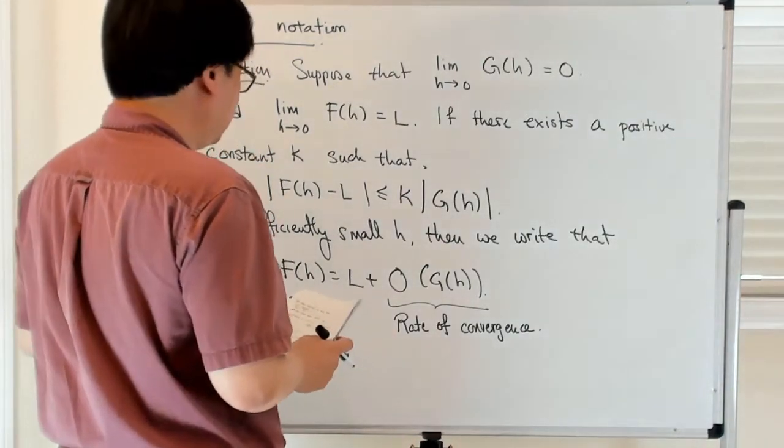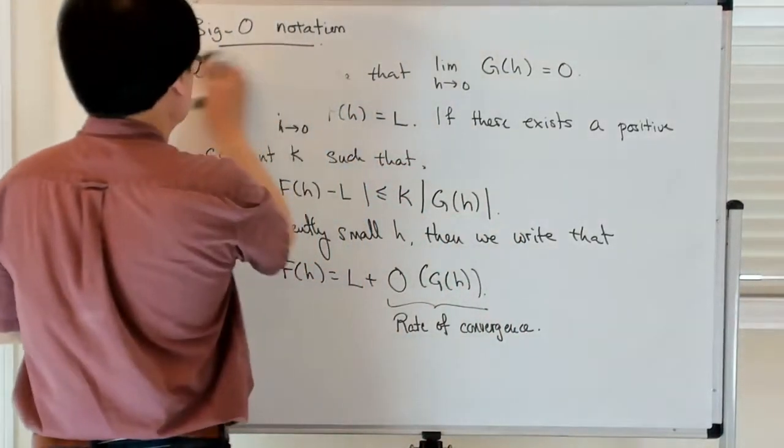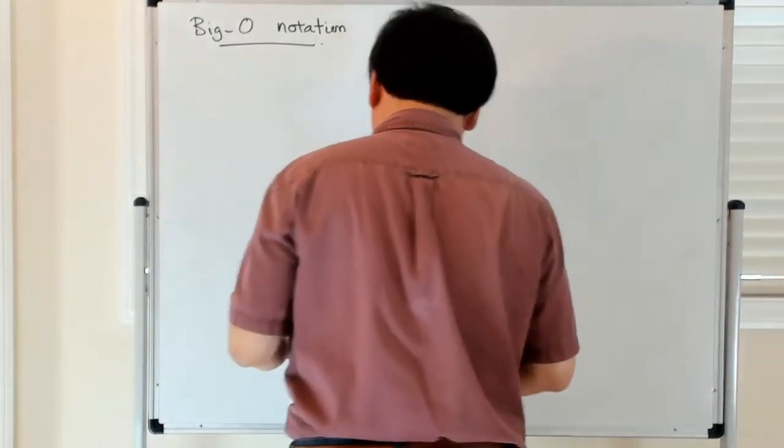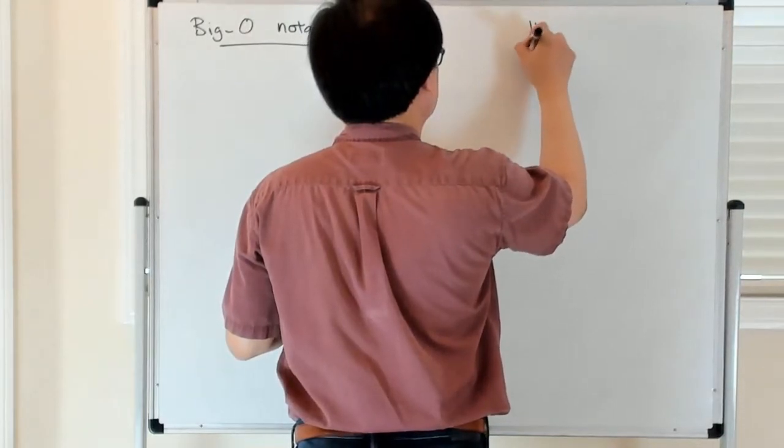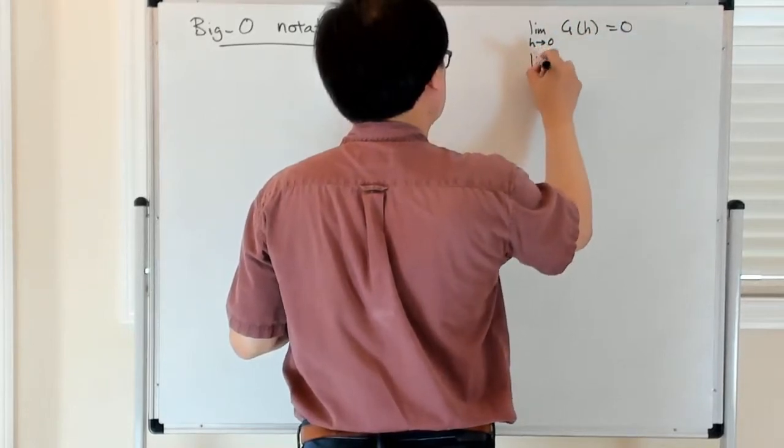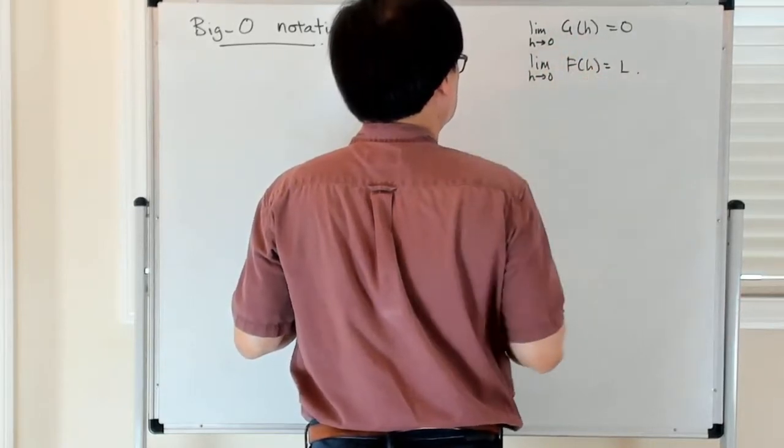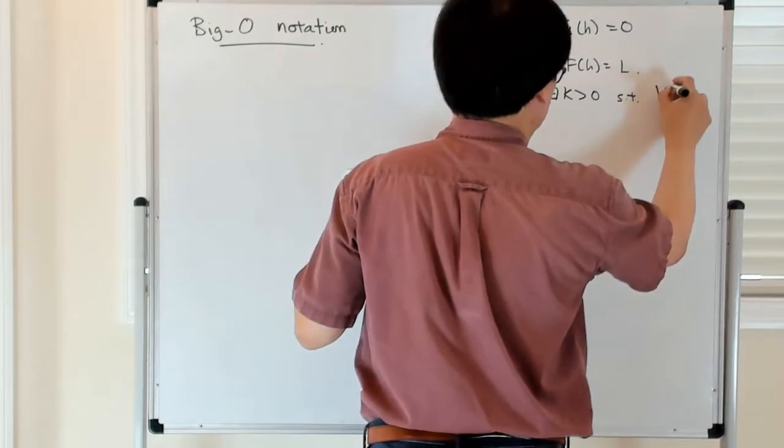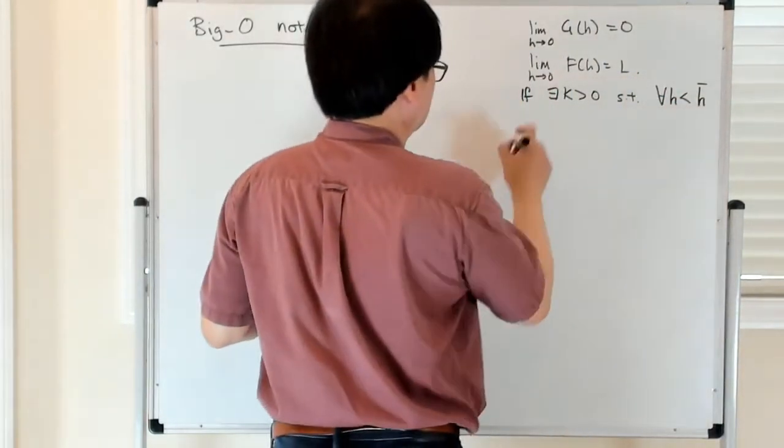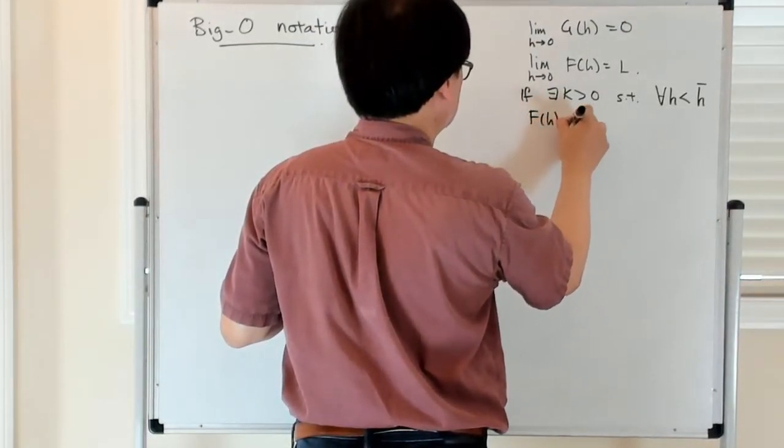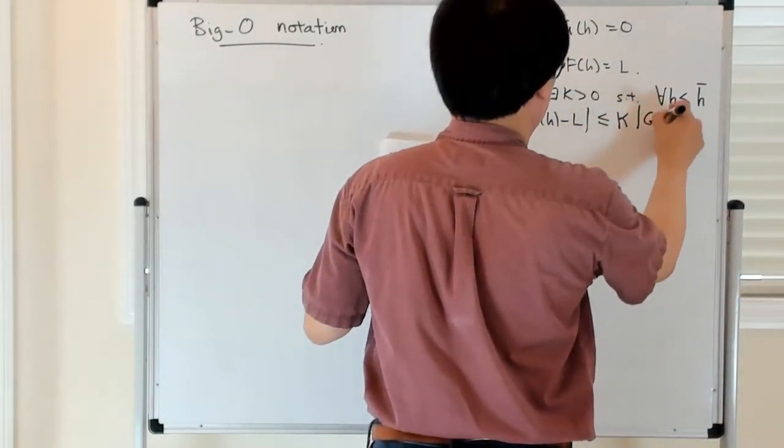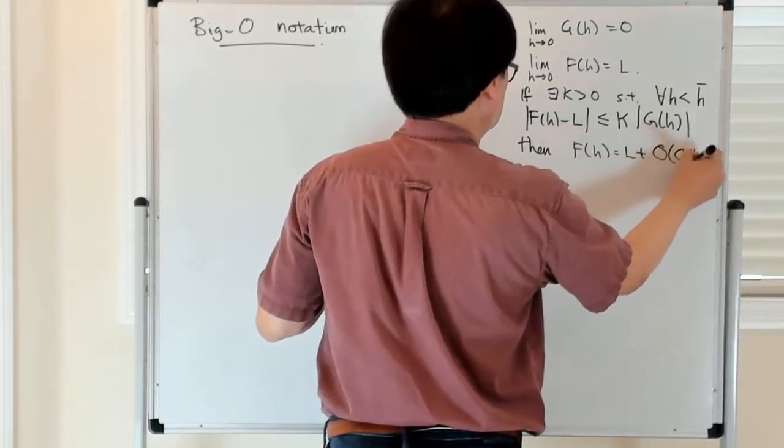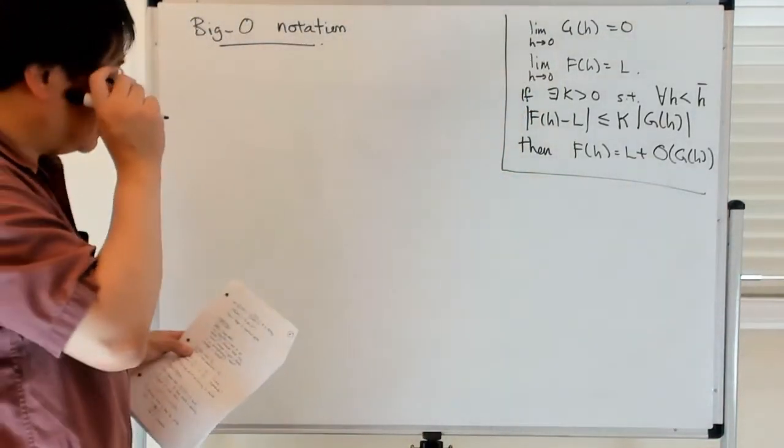So let's look at an example of this. Let me maybe write down the essence of the results. So we have limit as h goes to 0 of g of h is equal to 0 with the limit as h goes to 0 of f of h is l. So if there exists a k greater than 0 such that for all h less than some h bar, say, that f of h minus l in absolute value is bounded from above by k times g of h, then we say that f of h is equal to l plus big O of g of h. So that's more or less what we had seen just now.